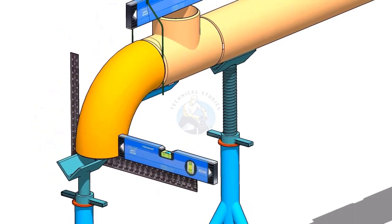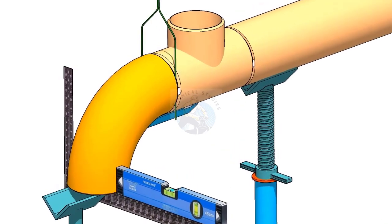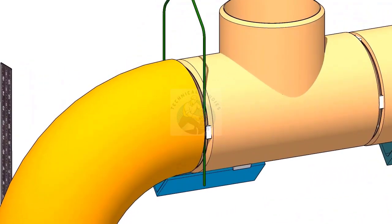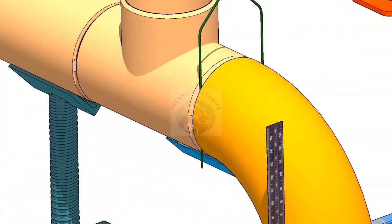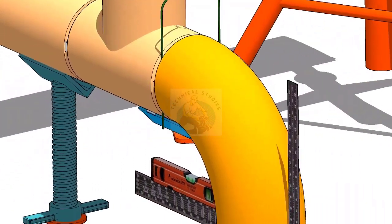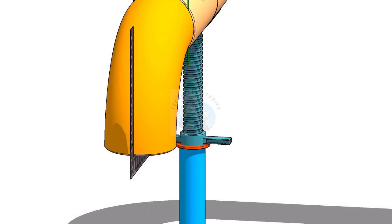Tack weld on both sides of the elbow with the T. Rotate the right angle and the spirit level longitudinally and maintain the elbow face level.